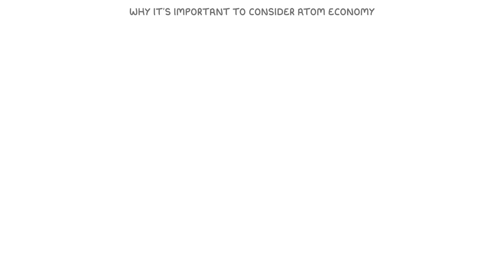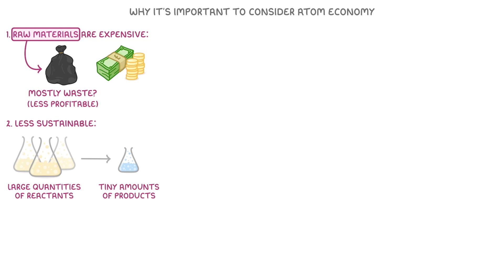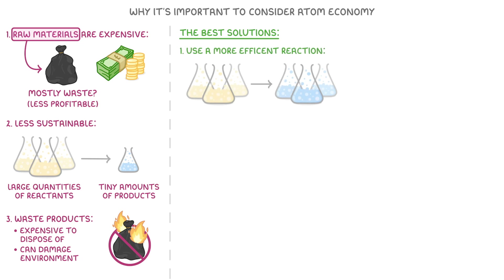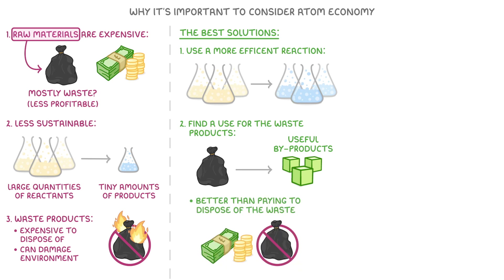Next, we need to cover the main reasons why it's important to consider atom economy. Number one is that raw materials are expensive, and so if they're mostly being converted into waste products, the process is generally going to be less profitable. Reason two is that it's less sustainable to use large quantities of reactants to make tiny amounts of products. And three, waste products themselves can be expensive to get rid of, and can damage the environment. The best solutions to these problems are to either use a more efficient reaction, or to find a use for the waste products, so that they become useful byproducts instead of waste. And even if they can't sell these useful byproducts for very much money, it's still much better than paying to dispose of the waste.